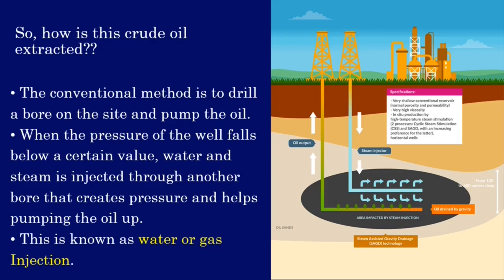We will now see the extraction process. Conventionally, this is done by setting up large oil rigs. The process begins by drilling a vertical bore directly to the oil pool. The speciality of this process is that it uses gravity and natural pressure from the well to pump the oil to the surface. Once the pressure falls below a certain value, steam and water are injected through a parallel bore to maintain pressure and help pump the oil. This process is known as water or gas injection.